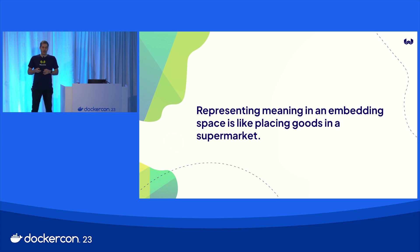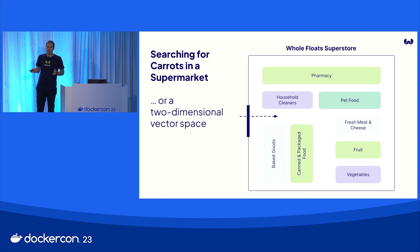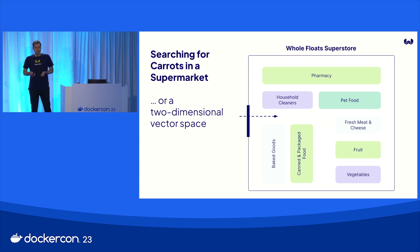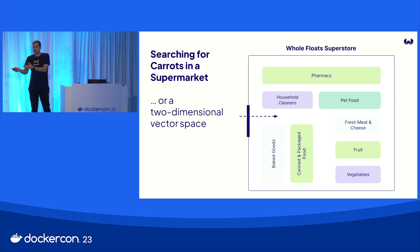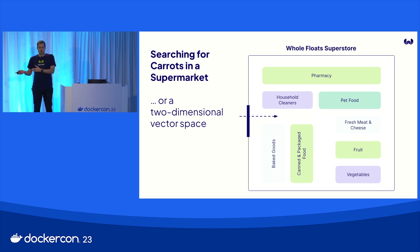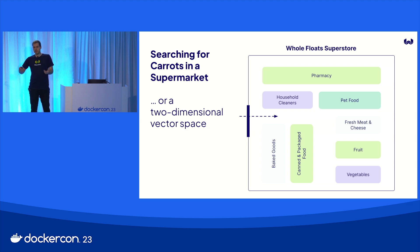For that, it uses high-dimensional vector embeddings, which is kind of hard to imagine. But if we just imagine a two-dimensional vector embedding, there's an example that makes it super easy to understand. When you are looking for something in a supermarket, you're kind of doing a similarity search. If you're looking for carrots and you walk in, on one side you see non-food stuff and on the other side you see food — you immediately know the food section is closer to what you're looking for. In there, you see packaged goods versus fresh goods, so you go to the produce section. In the produce section, you see fruit and vegetables and you think, is my carrot closer to the apple or to the potato? You say potato, and you move in that direction. That's the idea of indexing by meaning.